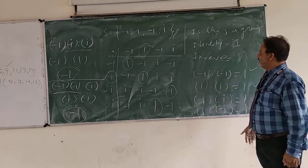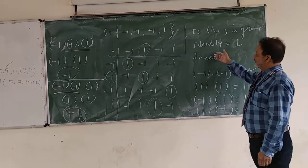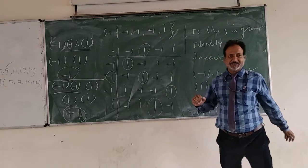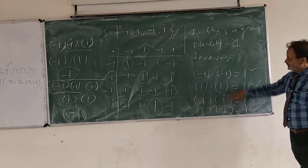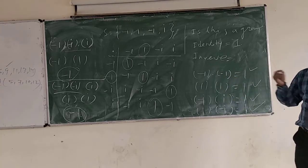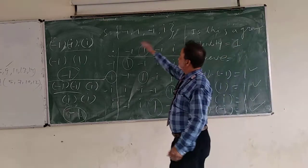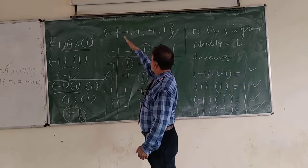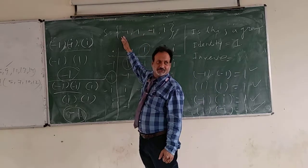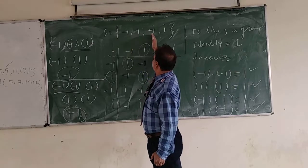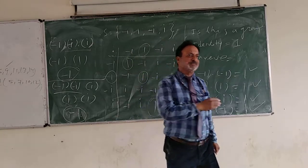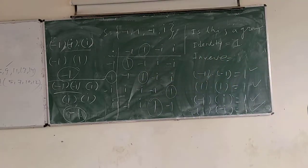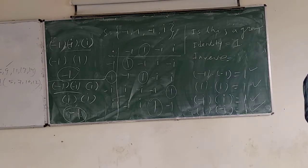The identity element is 1. We have also mentioned the inverse of each element: inverse of minus 1, minus i, and i — we have inverses of all the elements. Every element has an inverse, there is an identity element, and the operation is associative.